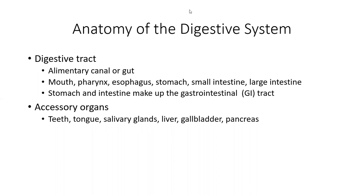The digestive tract is the alimentary canal, or the gut. It continues from the mouth through the large intestine. The stomach and the intestines are what we call the gastrointestinal tract, not including the mouth, pharynx, and esophagus.